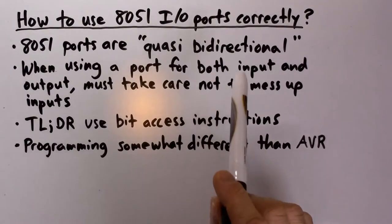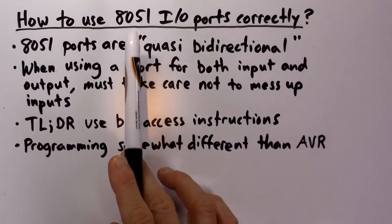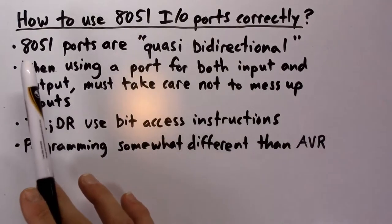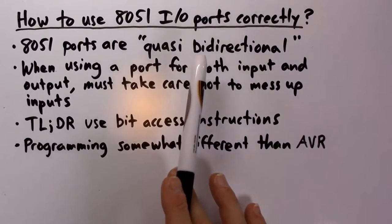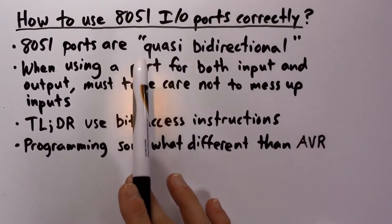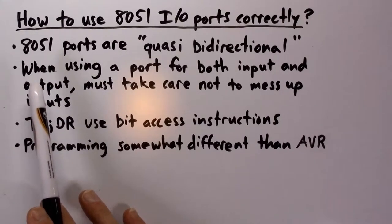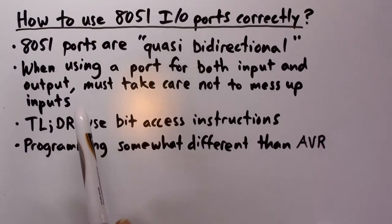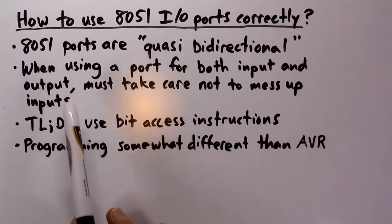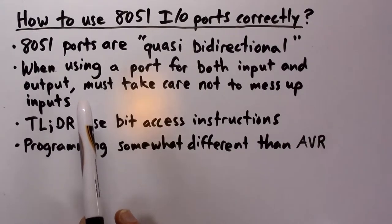Welcome to random stuff number two. Our goal today is to figure out how to use the I/O ports on 8051 family devices correctly. The 8051 devices have quasi-bidirectional I/O ports, and we'll explore the consequences of that. The main thing we have to take care about is if we want to use a port for both input and output, as we did in the previous video, where I ran into some unexpected behavior. In this video, we'll figure out what was going on and how to fix the problem.